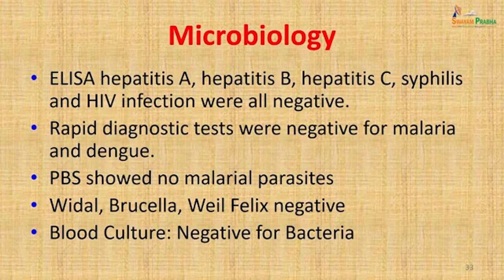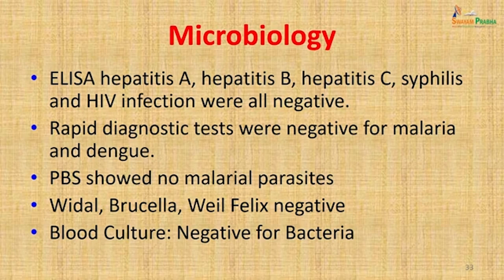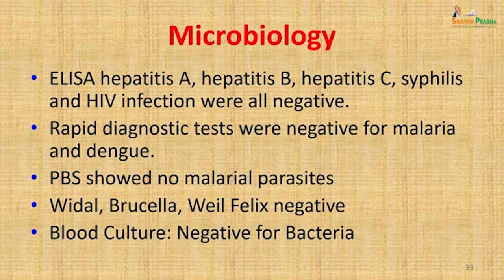Routine tests for fever in a jaundiced patient were done: ELISA for hepatitis A, B, C, syphilis, and HIV were all negative. Rapid diagnostic tests were negative for malaria and dengue, and peripheral blood smear showed no malarial parasite. The Widal, Brucella, and Weil-Felix tests were negative, and blood culture was negative for bacteria.